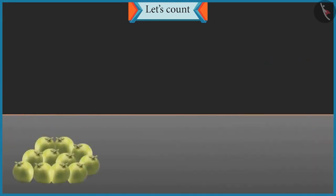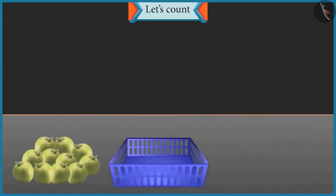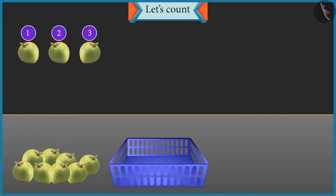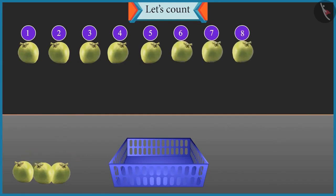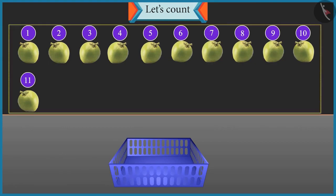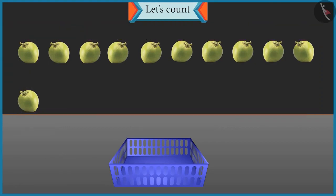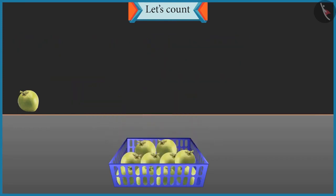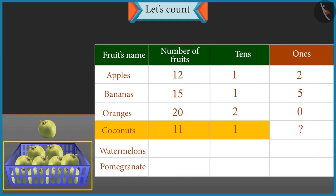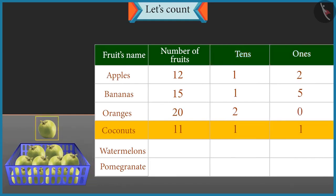Now count these coconuts and place them in the basket. One, two, three, four, five, six, seven, eight, nine, ten and eleven. So how many groups of ten coconuts are there, and how many single coconuts are left? There is one group of ten coconuts and one single coconut left. So it will be one ten and one one in eleven.